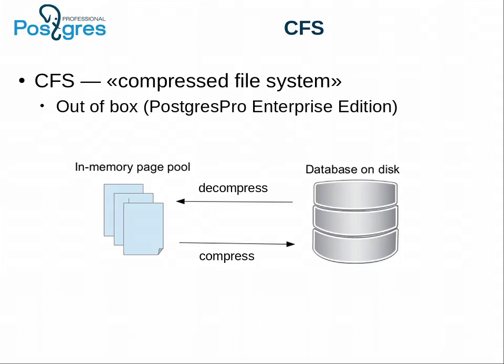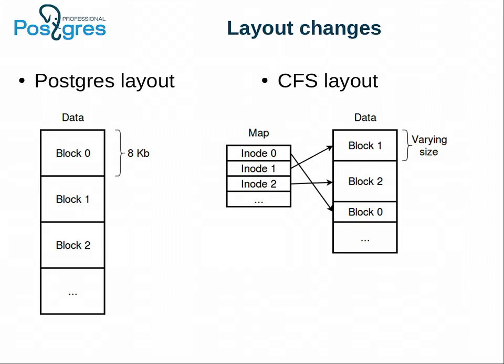The main idea of CFS is to apply compression to the page when it is evicted from the buffer cache — not to disk directly, but to the page cache of your system. Since compressed pages have variable size, we need additional mapping, which is implemented in a CFM fork of the relation — just one more file with a map. CFS always writes pages at the end of the file, which keeps writes more sequential and makes it possible to implement file extension in a lockless manner using atomics.